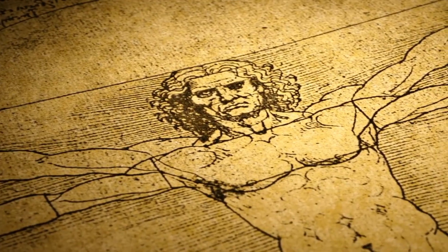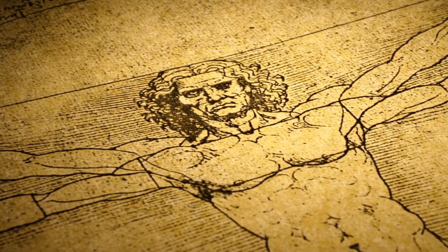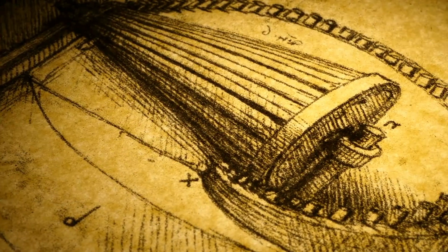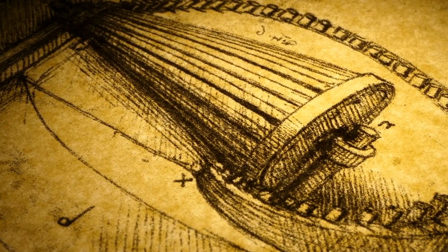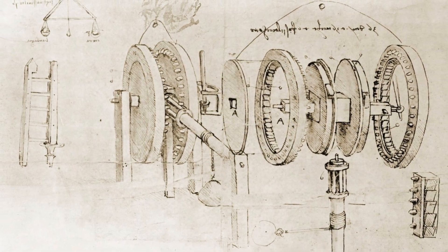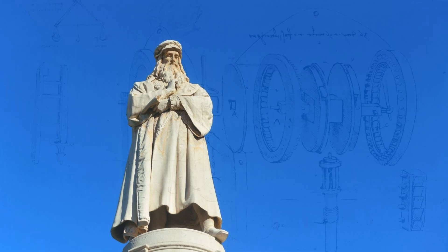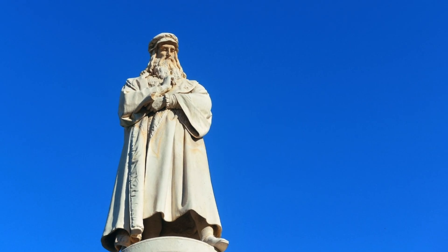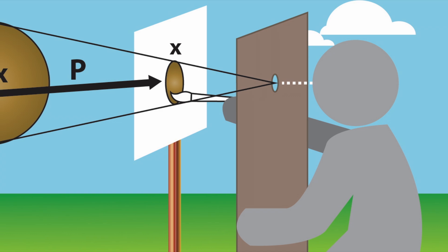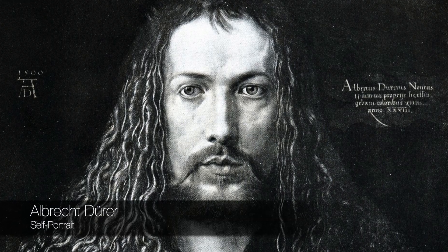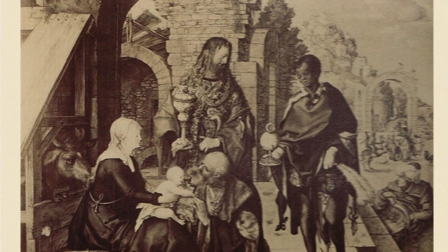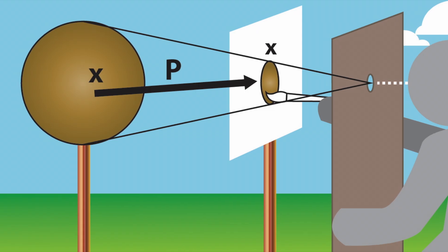How will we know where we are heading if we don't know where we are coming from? It's easy to forget that many of the techniques we use today are based on early works from hundreds of years ago. It began with Leonardo da Vinci, who worked on projective geometry, and continued with artists like Albrecht Dürer, who used the laws of perspective to create an instrument that could produce a true perspective drawing.